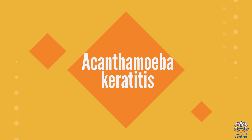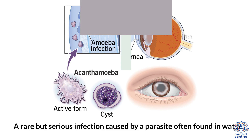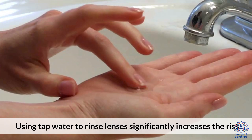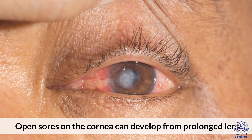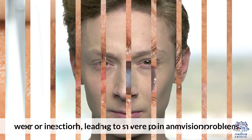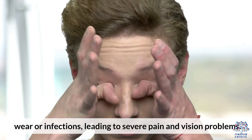Acanthamoeba Keratitis is a rare but serious infection caused by a parasite often found in water. Using tap water to rinse lenses significantly increases the risk. Corneal Ulcers — open sores on the cornea — can develop from prolonged lens wear or infections, leading to severe pain and vision problems.